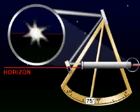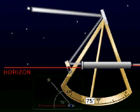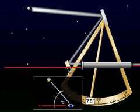The index mirror adjusts so that the horizon and the star are superimposed. The arm of the sextant moves to indicate the angular distance between the star and the horizon on the scale engraved on the sextant.